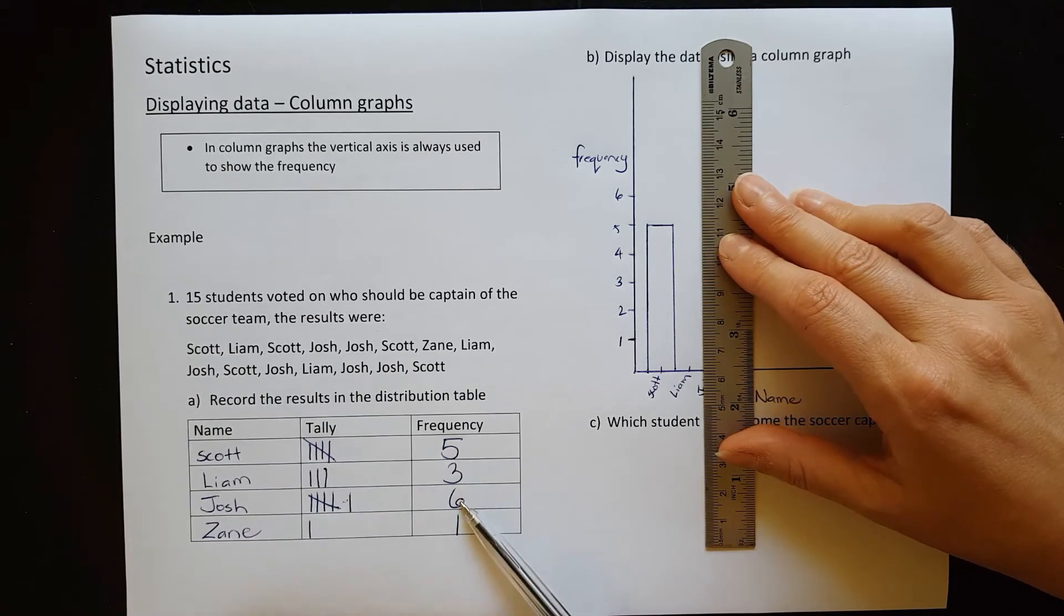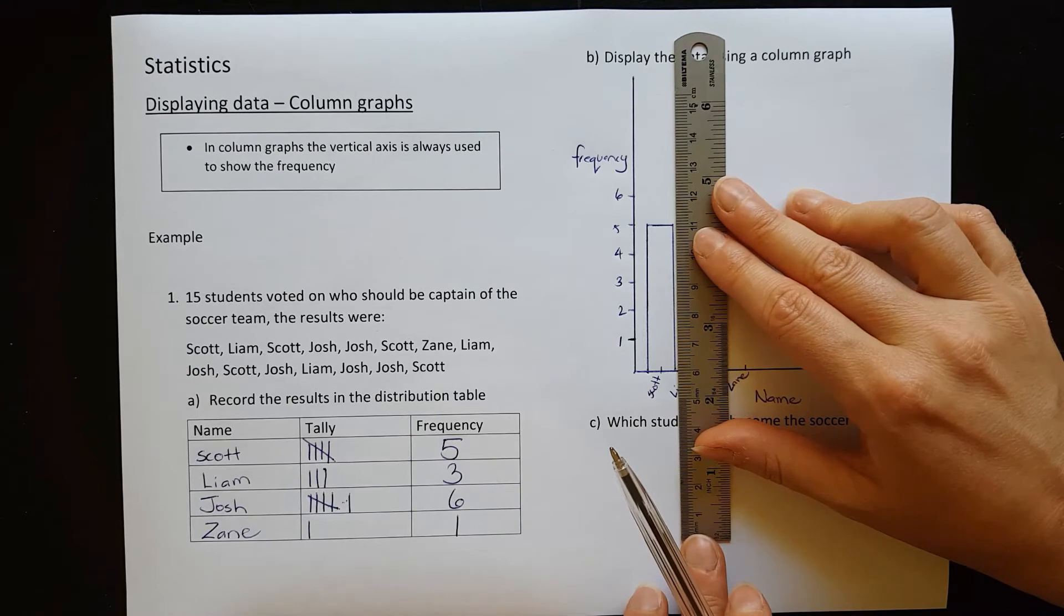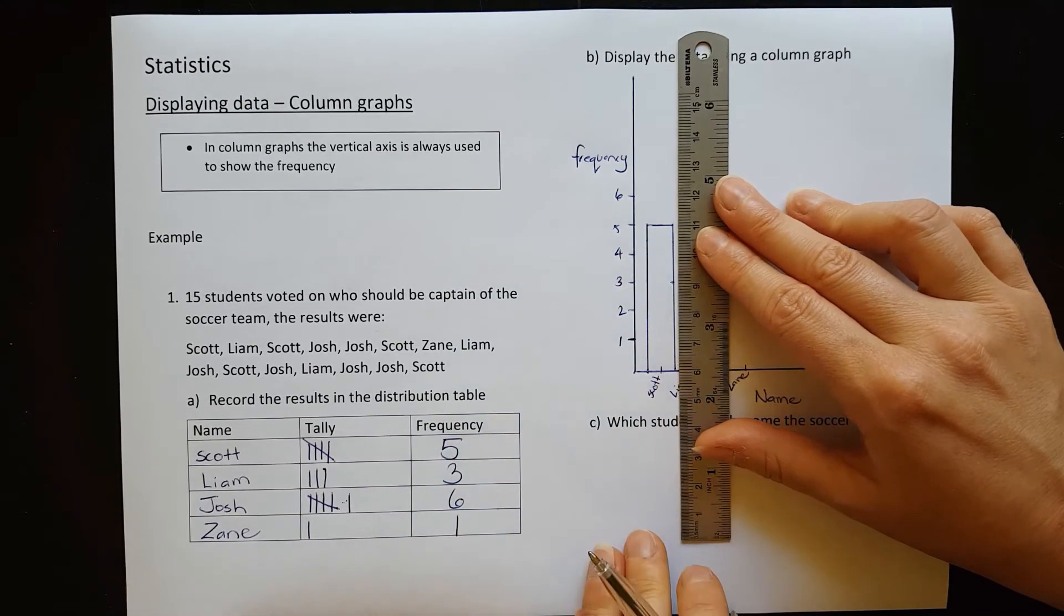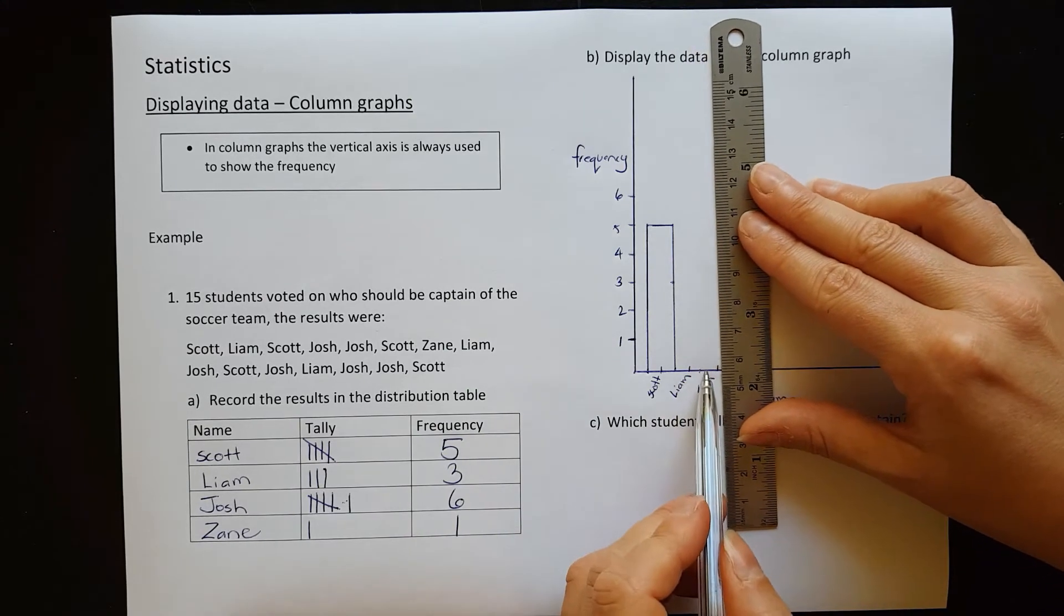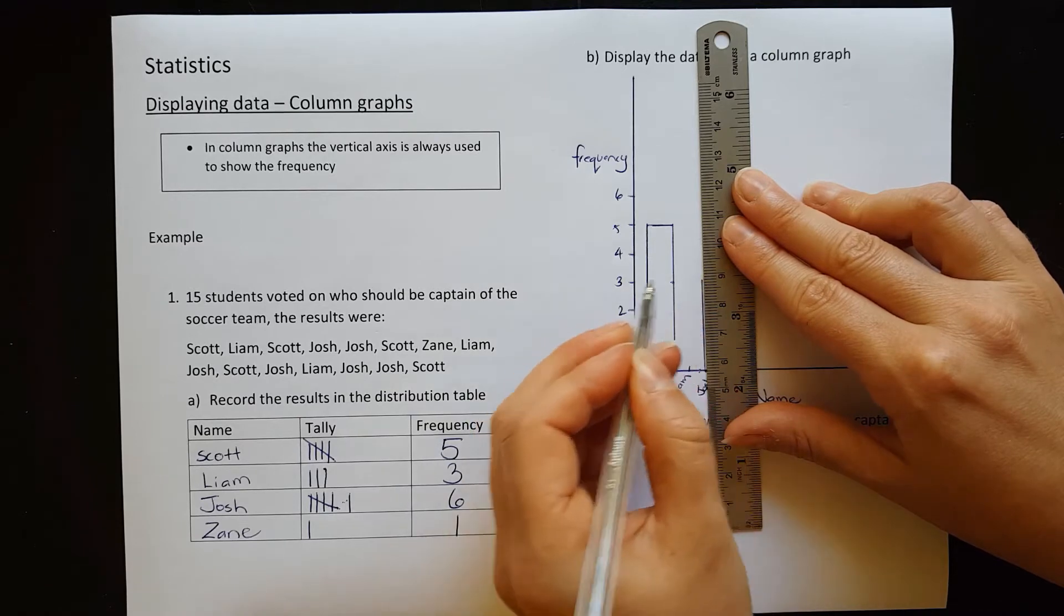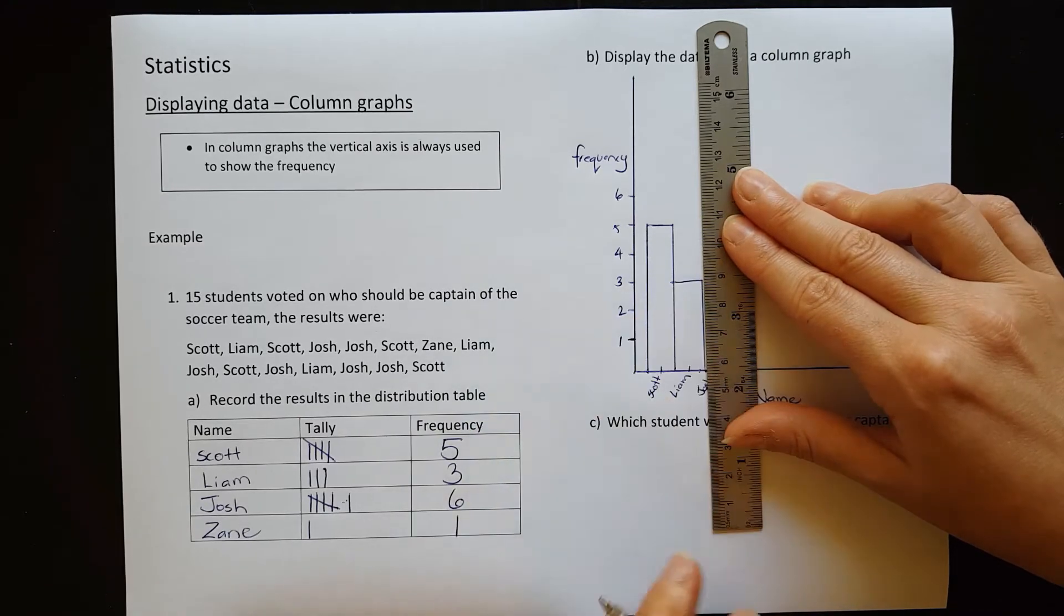Liam, his column goes up to a frequency of three. So we start here right at the same line as before, but this will go up to three. So we'll just draw a little mark there. And then halfway between we go up and that will be Liam's column.